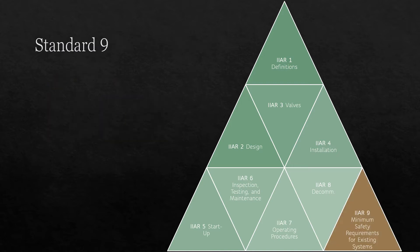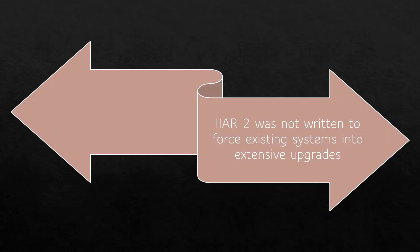The title of Standard 9 is Standard for Minimum System Safety Requirements for Existing Closed Circuit Ammonia Refrigeration Systems. Like all other IIAR standards, Standard 9 was published to address a specific need in our industry. The motivation for writing a standard for existing systems was two-fold. On the one hand, we wanted to prevent IIAR's design standard, Standard 2, from being used as a regulatory weapon against systems built before that standard was published.